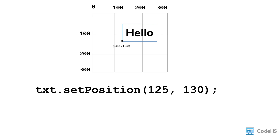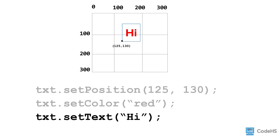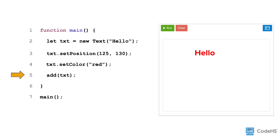There are a couple of other functions we can use to customize the text as well. We can set the color of the text, and we can change the value of the text. This allows us to update the value of the text without having to create a new text object. Lastly, add the text to the canvas by calling the add function and passing the variable between the parentheses.